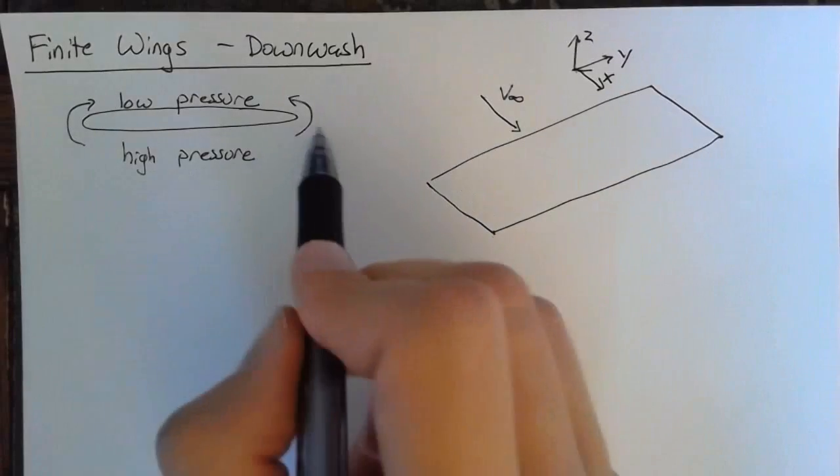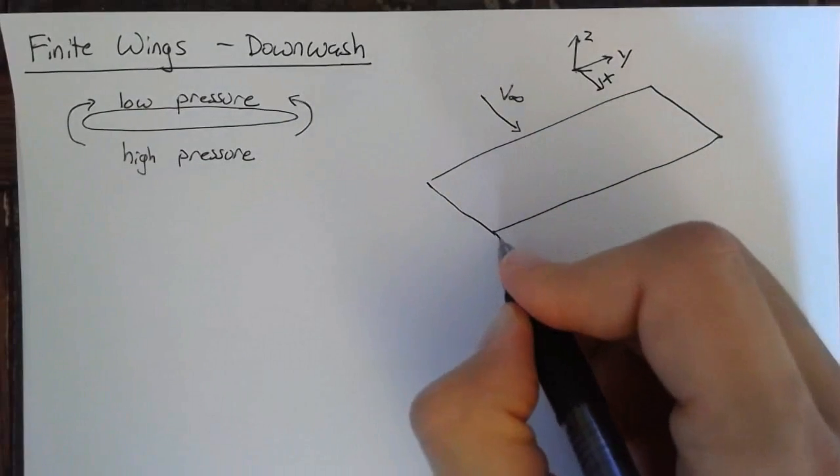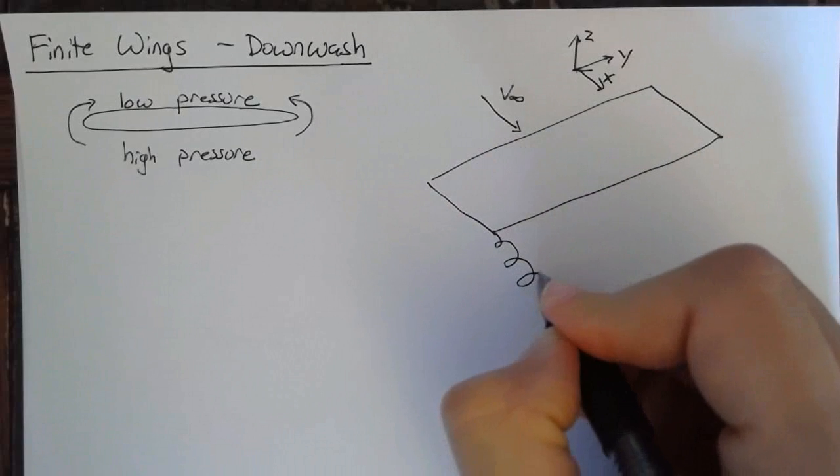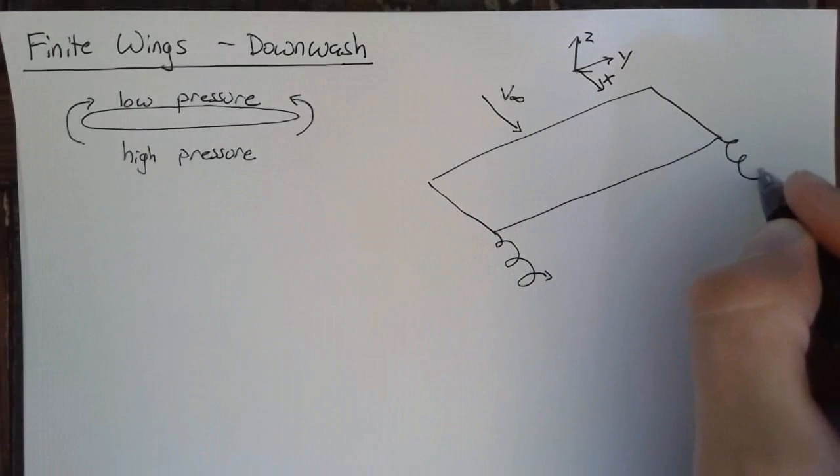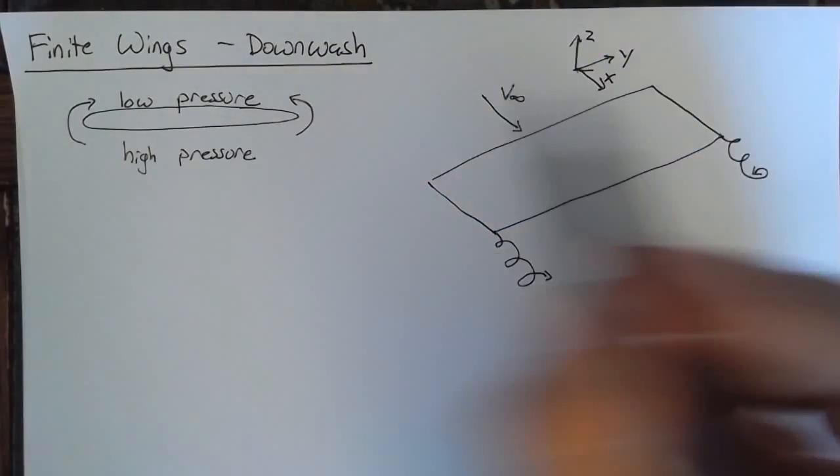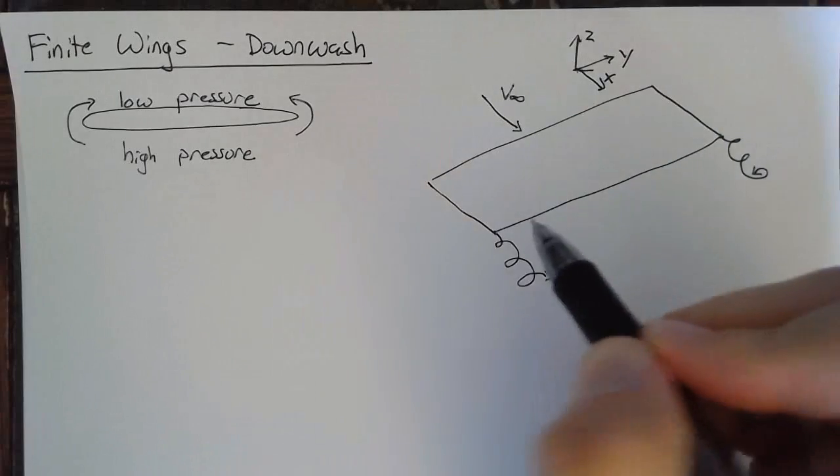And this causes some vortices that come off the wingtips, called some wingtip vortices. These are counter-rotating, and both of them cause air on the top to go towards the center, and on the bottom to come away from the center.